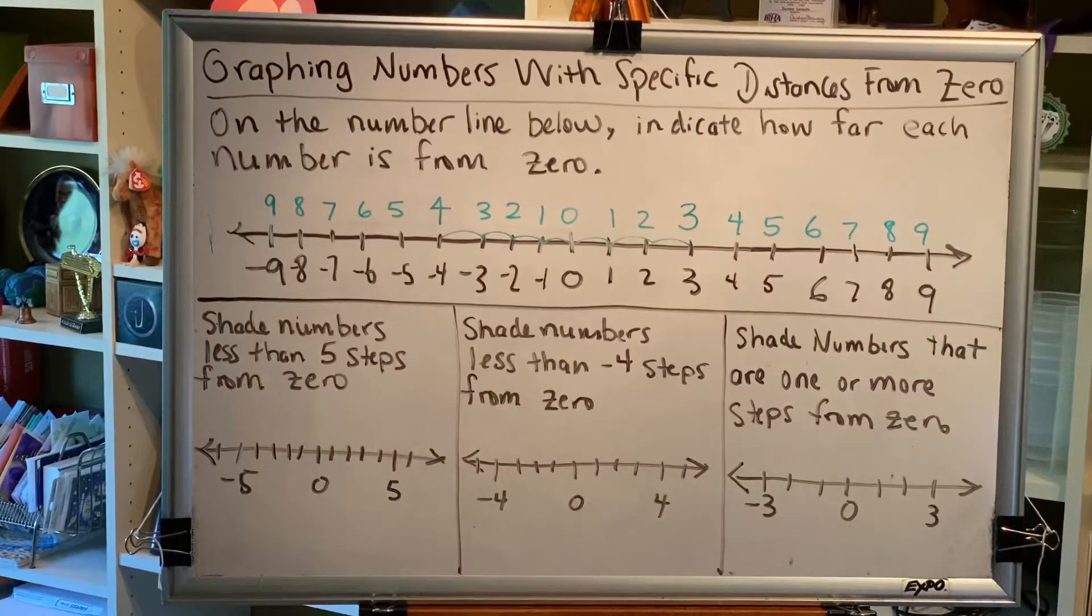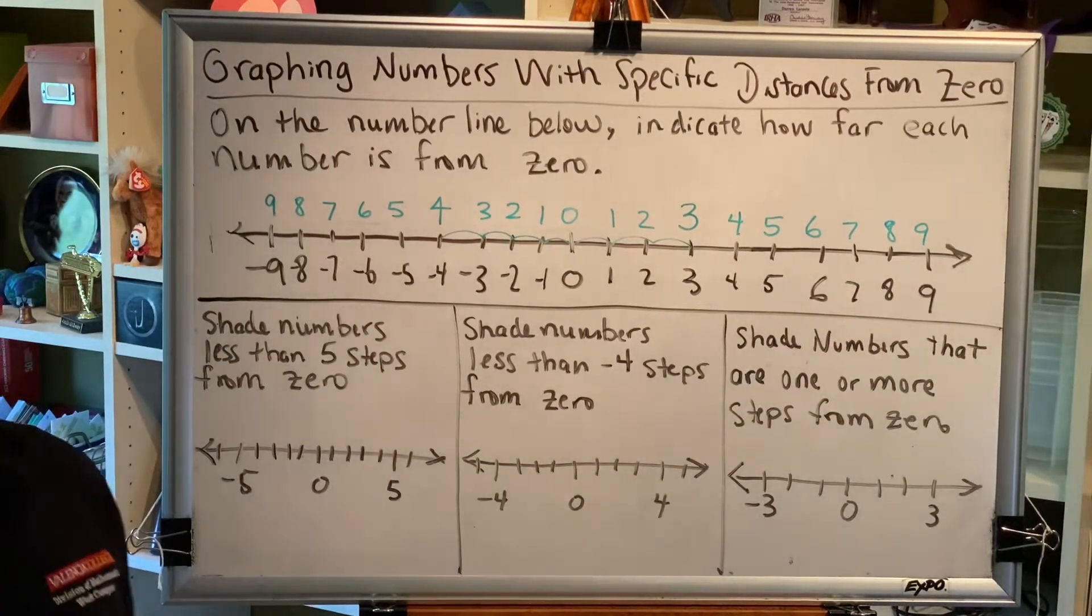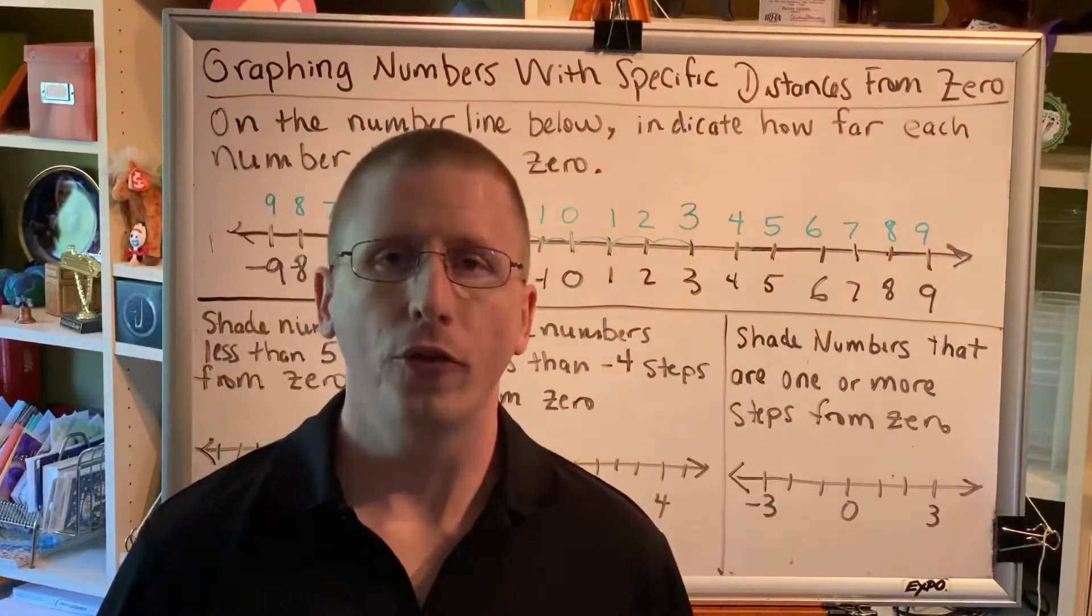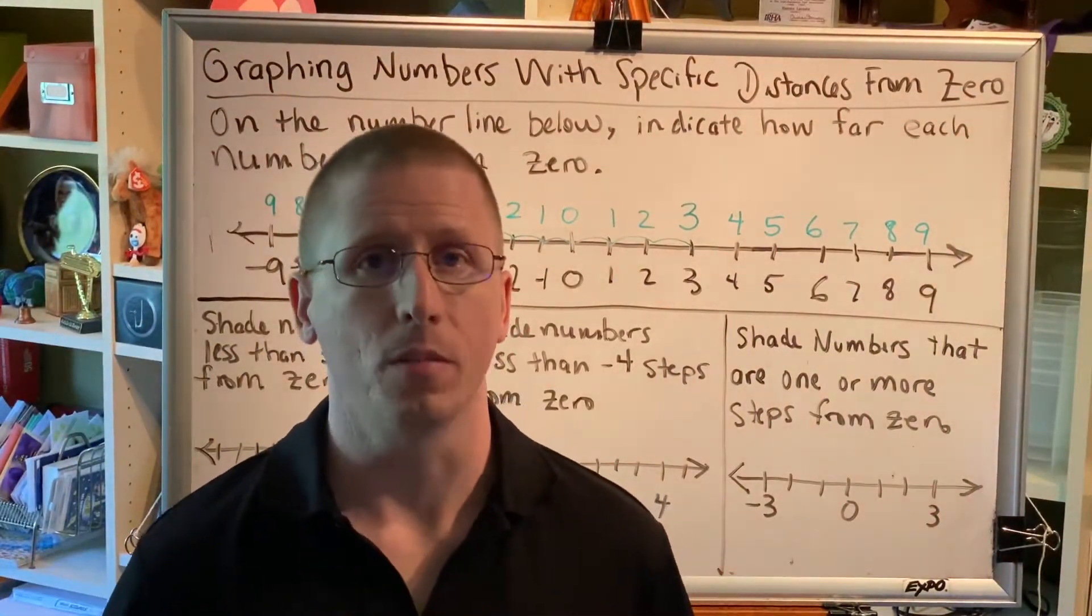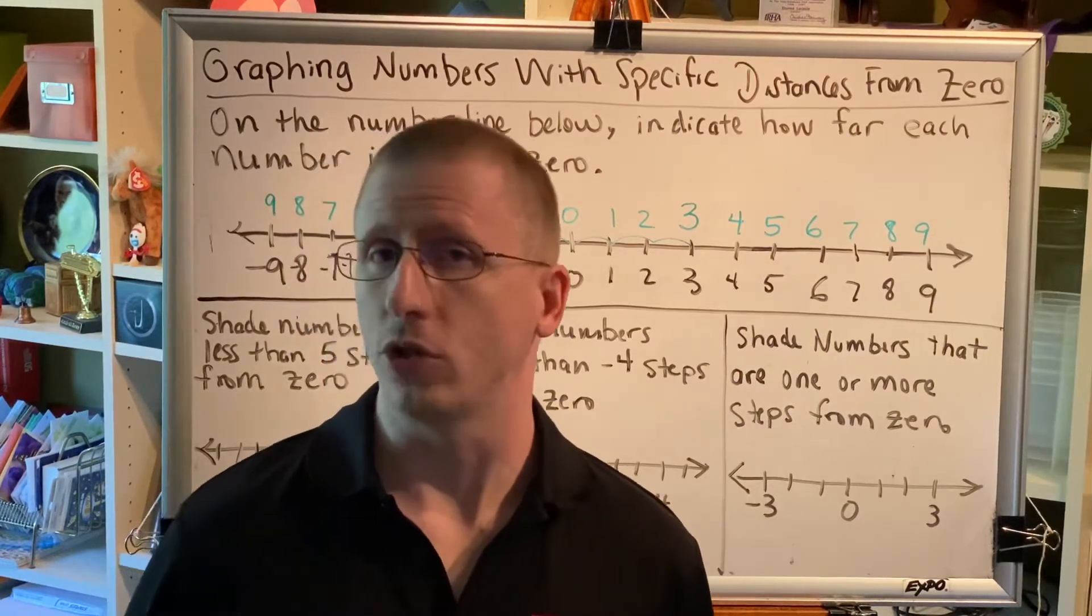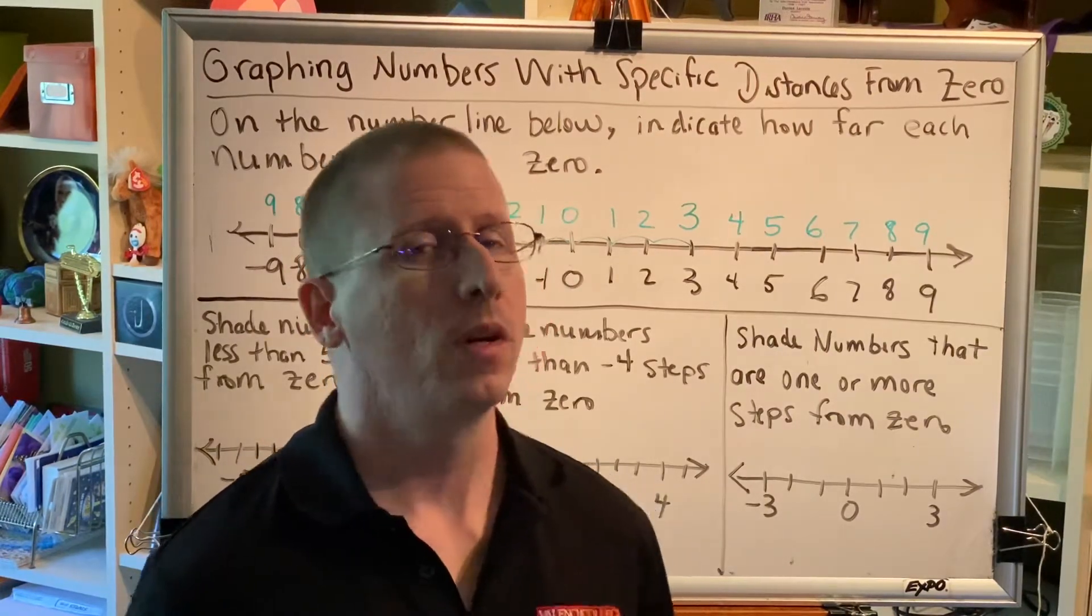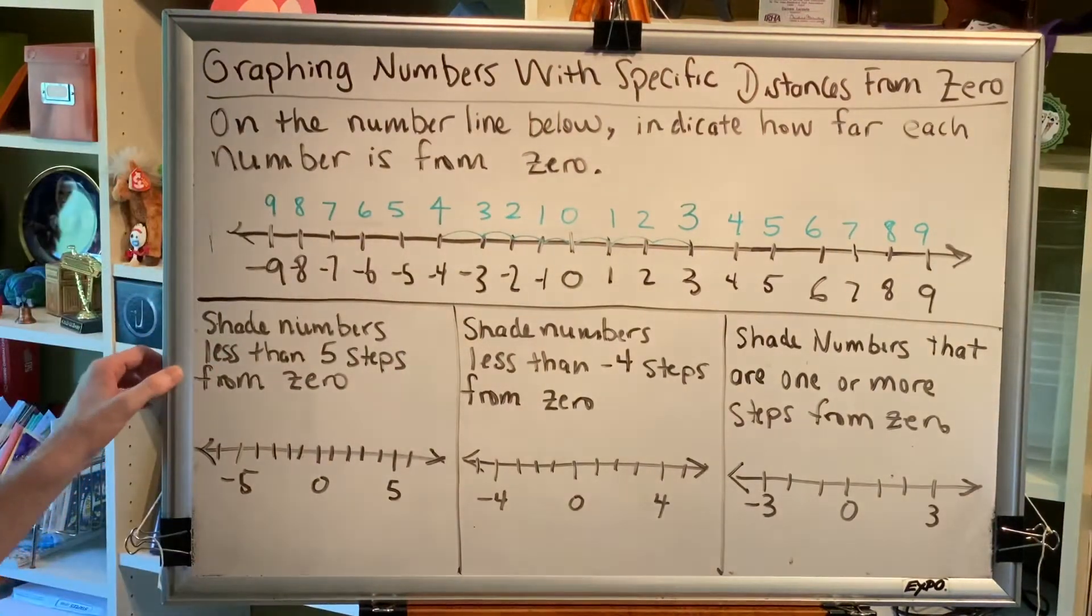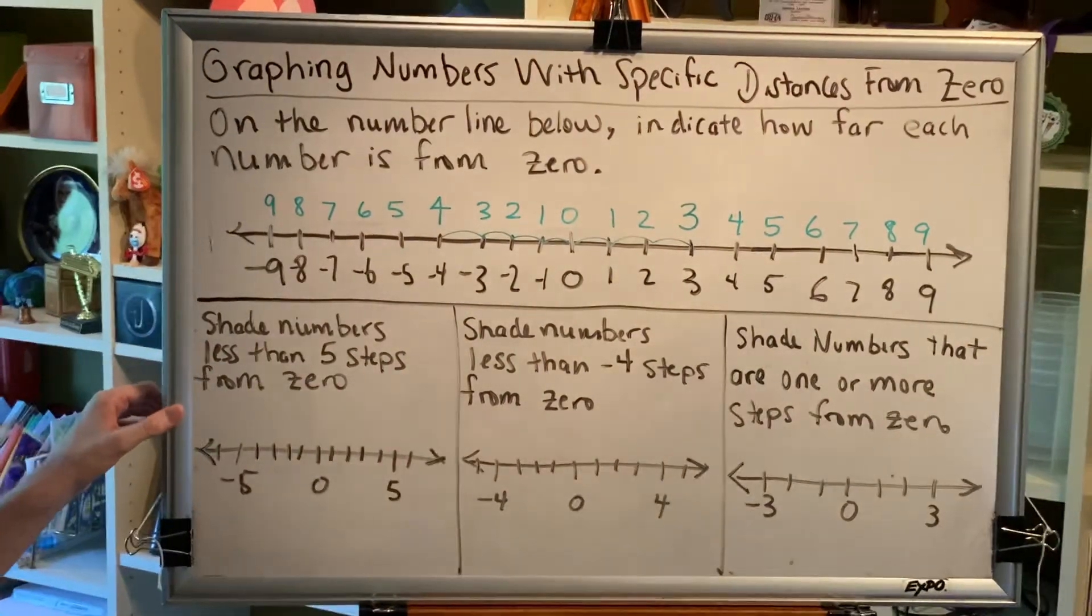This tool will allow us to solve problems that contain absolute value bars but also contain an inequality symbol, such as less than, greater than, less than or equal to, greater than or equal to. Let me show you what I mean. Shade all of the numbers that are less than 5 steps from zero.